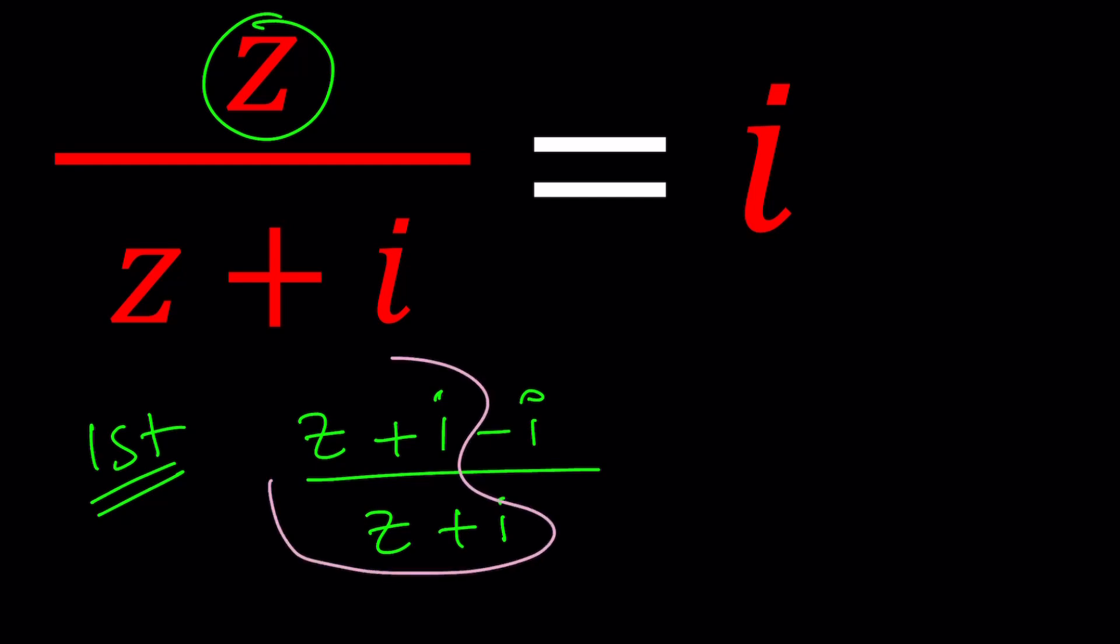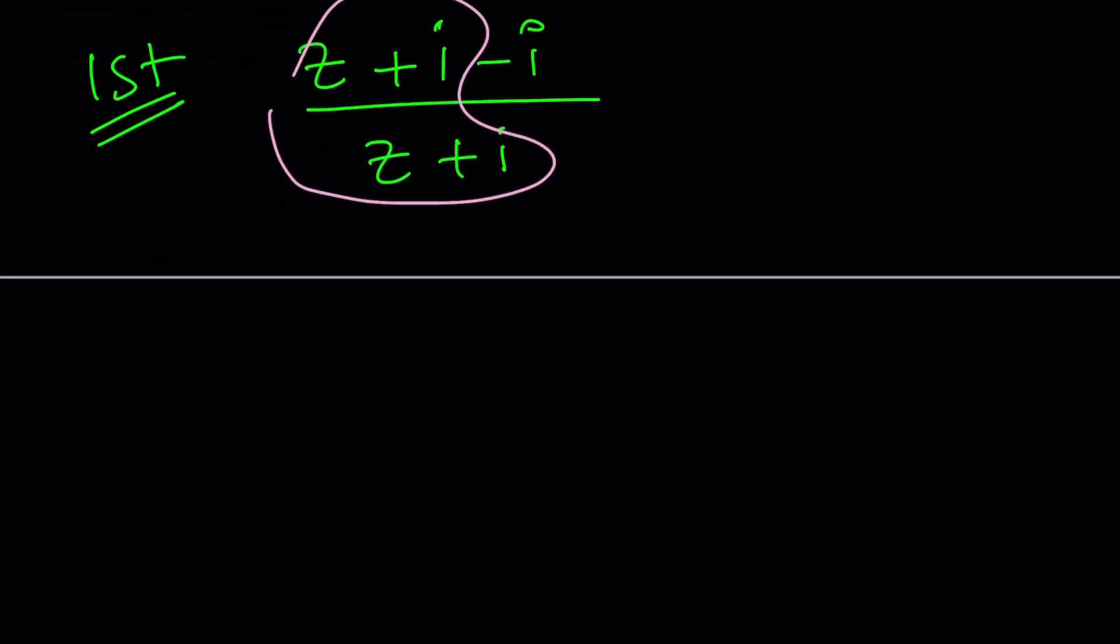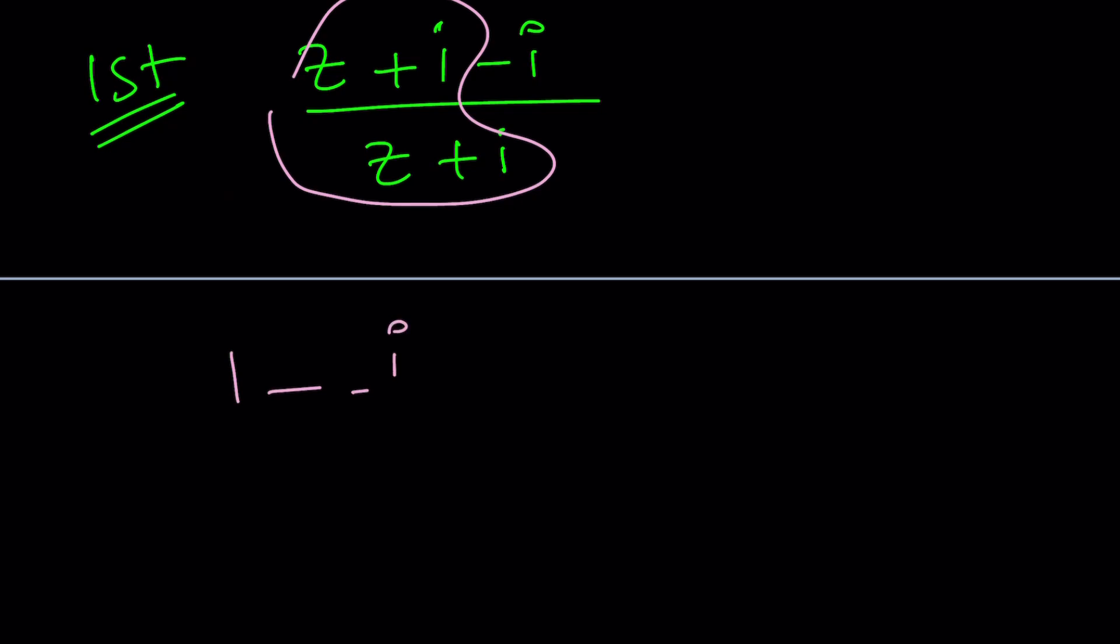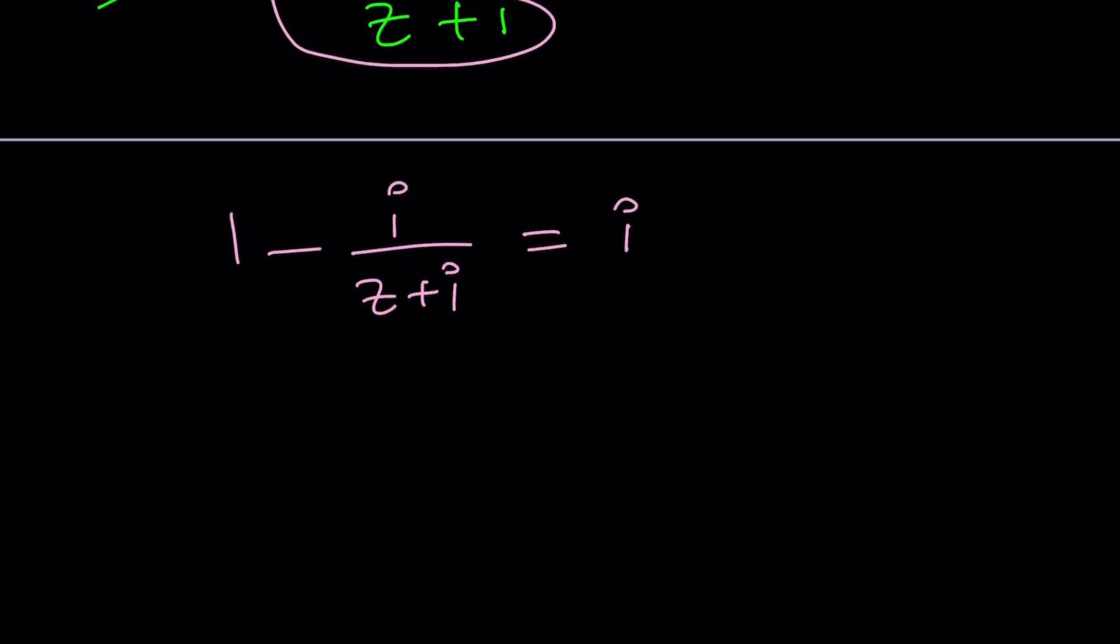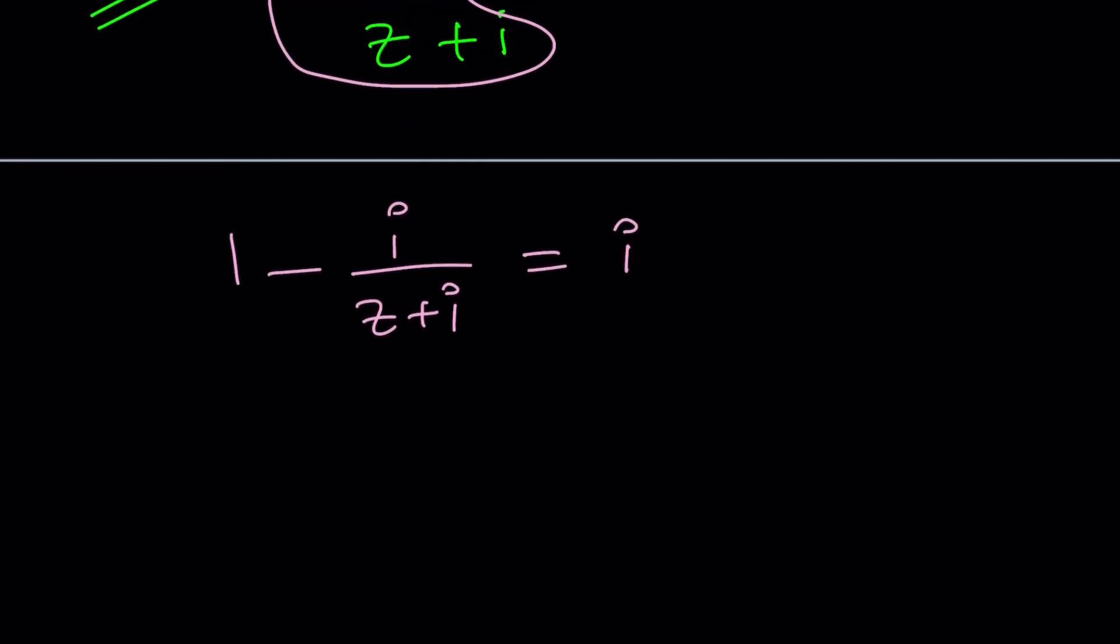This is going to give you one and one minus I over Z plus I equals I. How is that going to help me? You might be questioning, right? Why would you do that? Because my goal is to get to Z and I kind of isolated it. I only have Z in one of the terms and I can put it on one side and try to isolate it again by using cross multiplications.